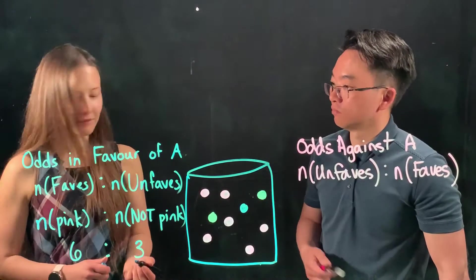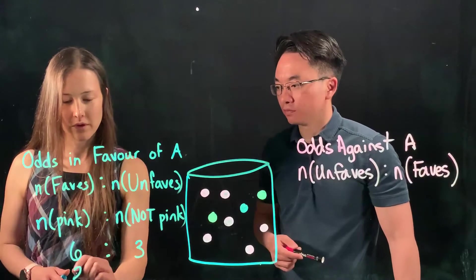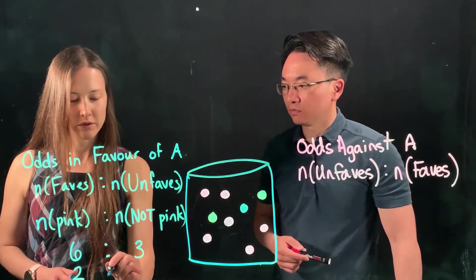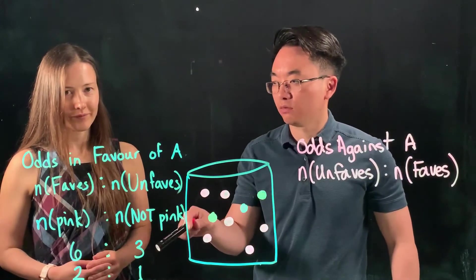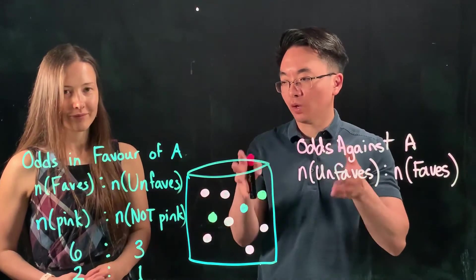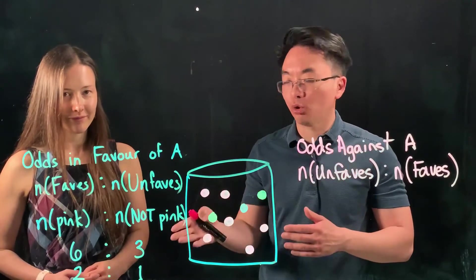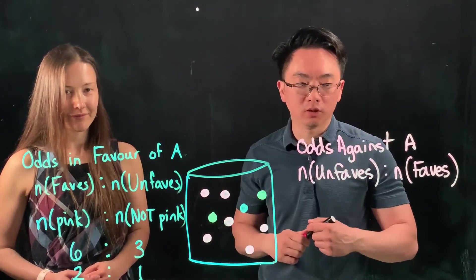And we could simplify that. We can divide by three on both the six and the three: two compared to one. And so notice the way that we report odds. It is a ratio. As a fraction, it would be a ratio, but we're not reporting it as a fraction. We're reporting it as a ratio with a colon in between.